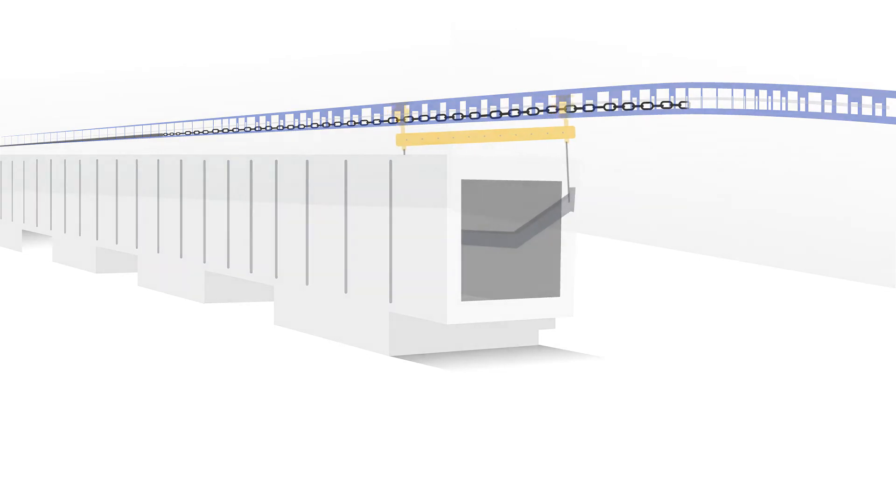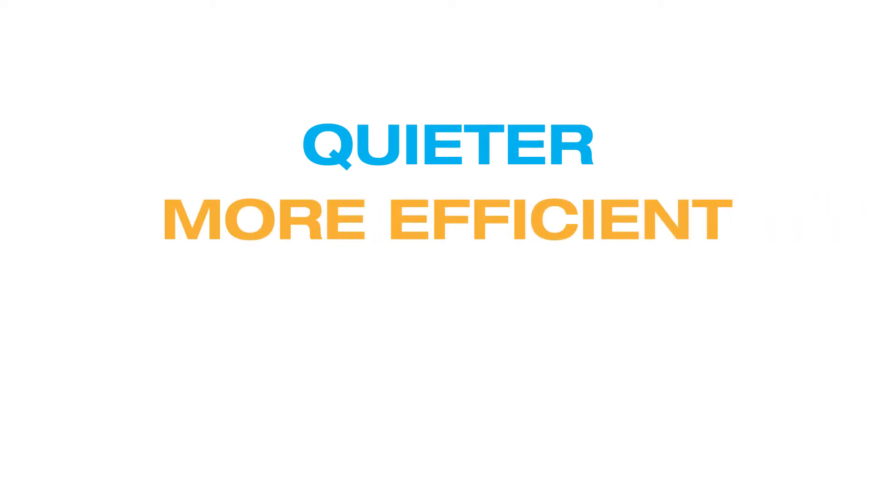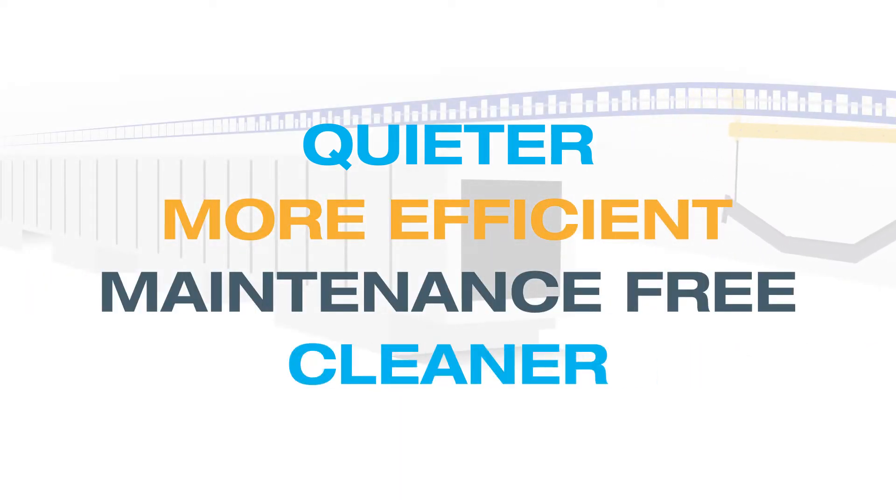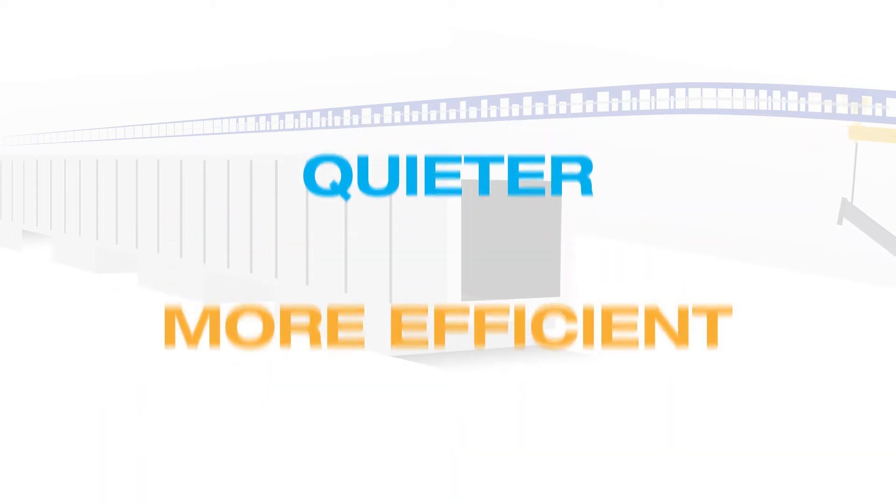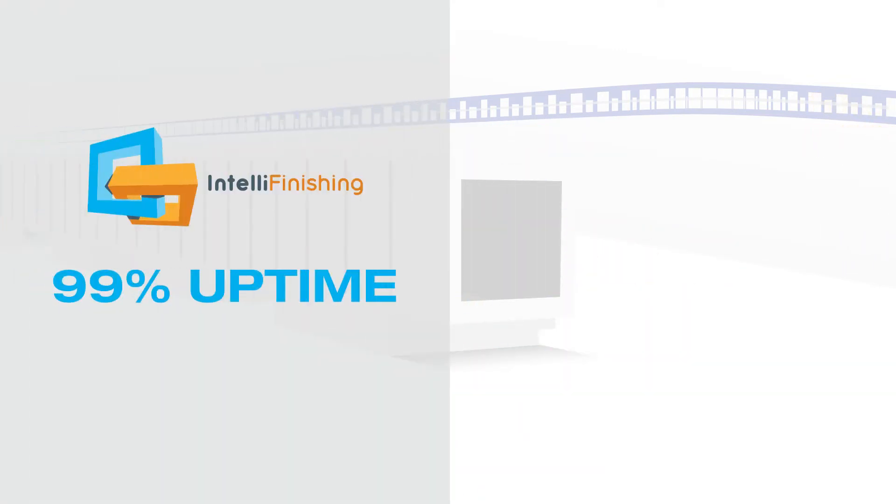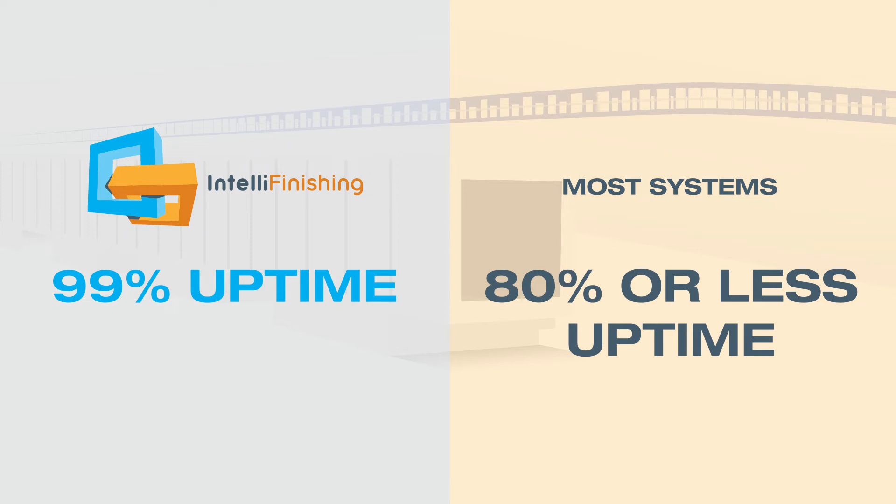What if you eliminated greasy dirt-collecting, energy-absorbing chains? An IntelliFinishing system is quieter, more efficient, nearly maintenance-free, cleaner than traditional automated finishing systems, and provides 99% uptime compared to only 80% or less for most chain-based systems.